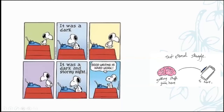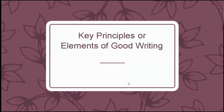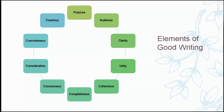You will have to understand the nuances of writing to be able to write well. Someone is asking about the Purdue Writing Lab — if you look at the references on my first handout, you have the link to the Purdue OWL, the Online Writing Lab. Most of the content I use is from the Purdue Writing Lab because it's excellently put. What are the key principles or elements of good writing? There are 10 main elements: purpose, audience, clarity, unity, coherence, completeness, conciseness, consideration, concreteness, and courtesy. There are seven C's, but sometimes they are combined to make five C's.